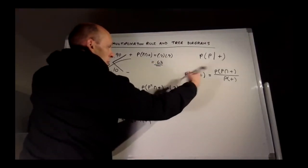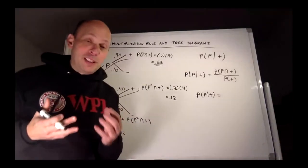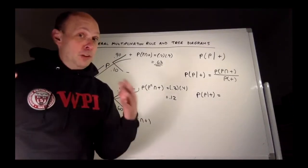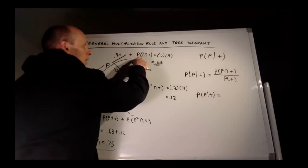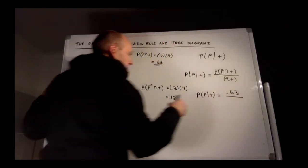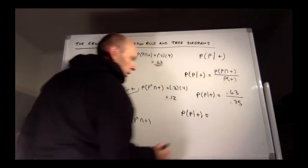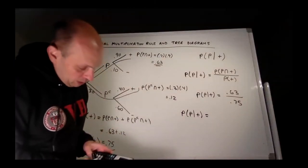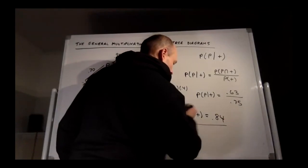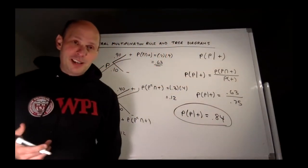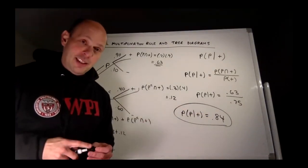Using the conditional probability formula, the probability of pregnant given positive equals the probability of pregnant and positive divided by the probability of positive — that's 0.63 divided by 0.75, which equals 0.84. So if a woman takes the test and gets a positive result, it doesn't definitively mean she's pregnant — it means there's an 84% chance she is actually pregnant.